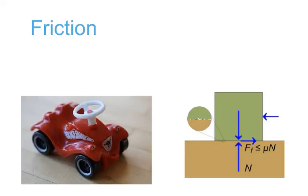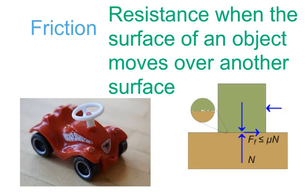Friction is the resistance to motion of an object moving relative to another. It's not a fundamental force like gravity or electromagnetism. Instead, it's believed to be the result of electromagnetic attraction between charged particles in two touching surfaces. So friction is the resistance when the surface of one object moves over another — you can move a heavy object more easily over a smooth surface versus a more jagged surface.